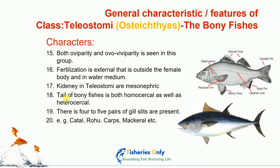Eighteenth character: the tail is homocercal type. The upper lobe of the caudal fin and the lower lobe of the caudal fin are equal in size — that is called a homocercal tail.